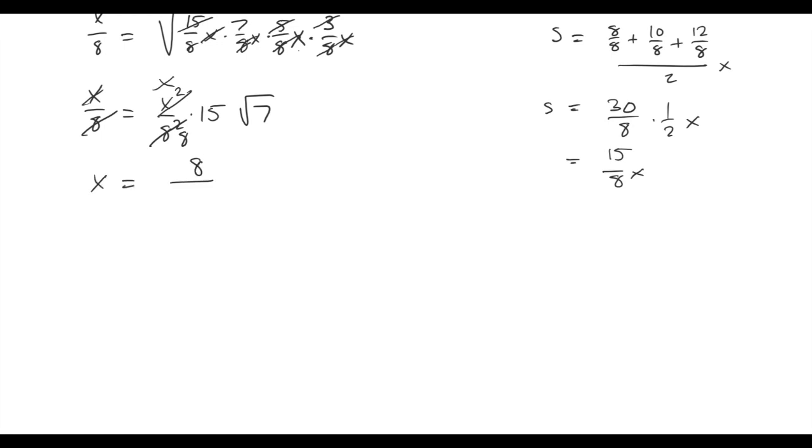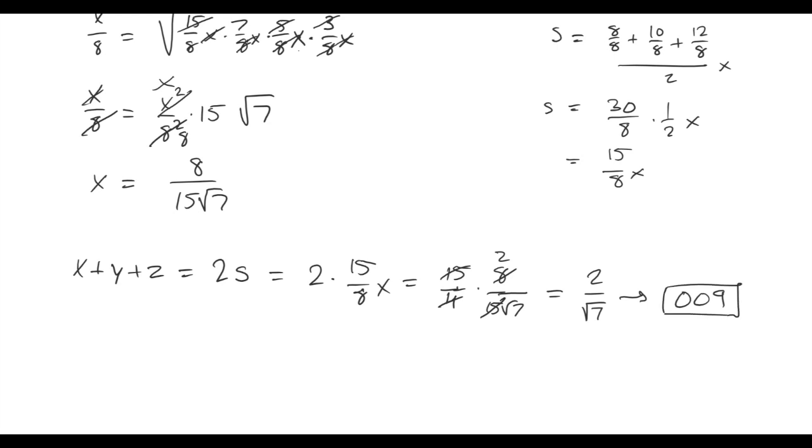Okay, what did we want? We wanted the perimeter x plus y plus z. That's twice the semi-perimeter, and we calculated the semi-perimeter to be 15 over 8 times x. And we know what x is, so x is 8 over 15 root 7. Cancel 15s—2 over root 7. That means m plus n is 9, and we're done.